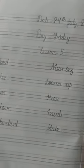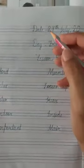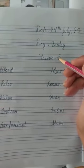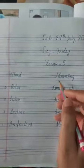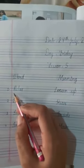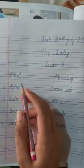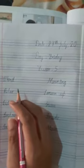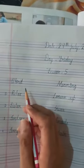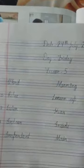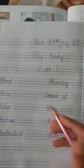Now write down the date, day, and lesson number as I am showing. Then write word meanings. First is 'relax' — r-e-l-a-x. Relax matlab humne apna easy feel karna, fresh feel karna — meaning to loosen up.